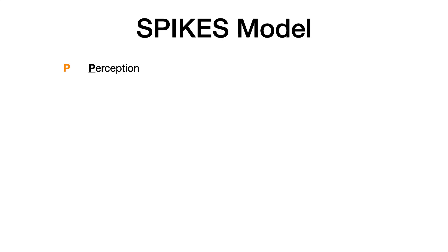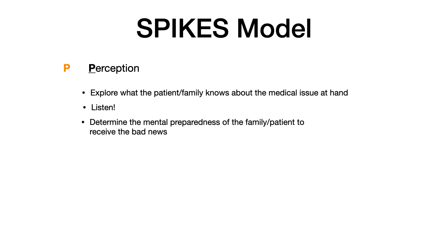The P in the SPIKES model stands for perception. In this stage, you want to explore what the patient or the family knows about the medical issue at hand. For example, if the patient passed away due to COVID, you would ask the family something like, 'What's your understanding of why Mr. Smith came to the hospital?' You're listening to what they understand and determining their mental preparedness to receive the bad news.